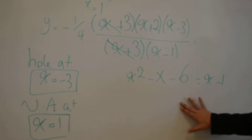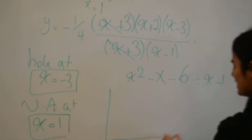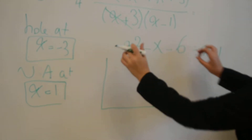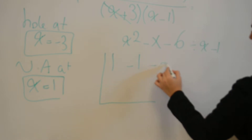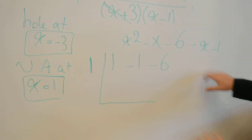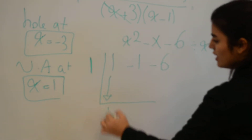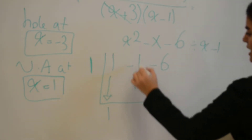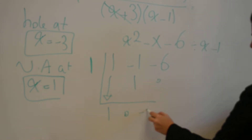We will use synthetic division to do this. For synthetic division, we need our coefficients from our equation: 1, negative 1, and negative 6, divided using x equals 1. We bring the first coefficient down, multiply by 1 — 1 times 1 is 1. Negative 1 plus 1 is 0, and 0 times 1 is 0, which gives us negative 6.